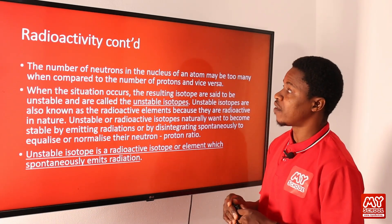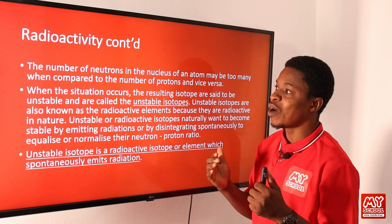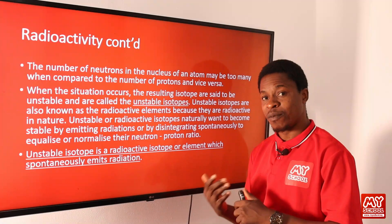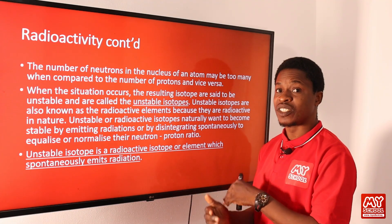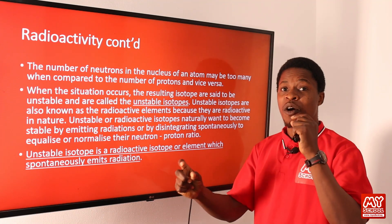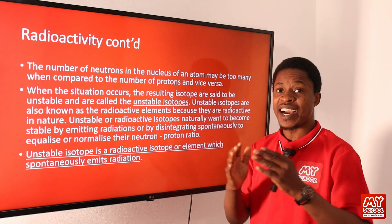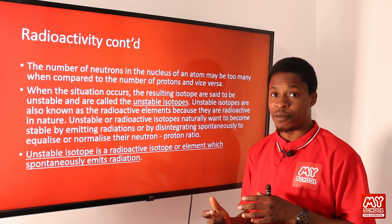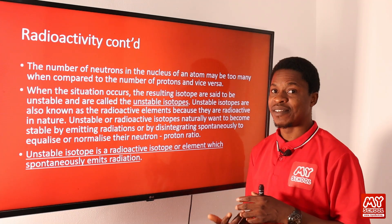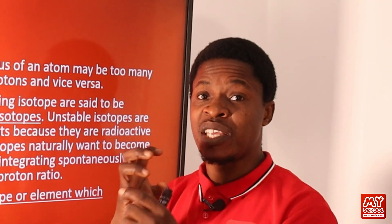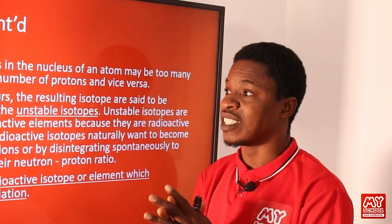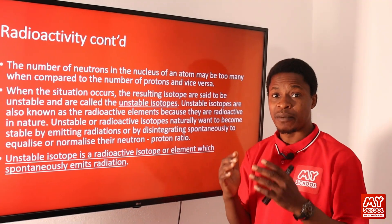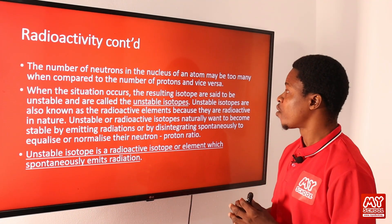The number of neutrons in the nucleus of an atom may be too many compared to the number of protons, or vice versa. When the number of neutrons and protons are far apart in ratio, that atom will be unstable. The stability of an atom is shown by whether the neutron-to-proton ratio is equal or nearly equal.